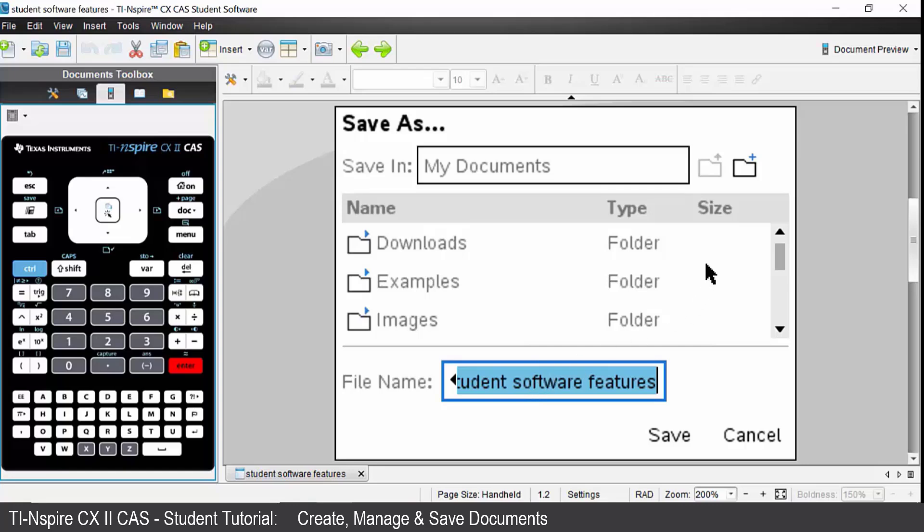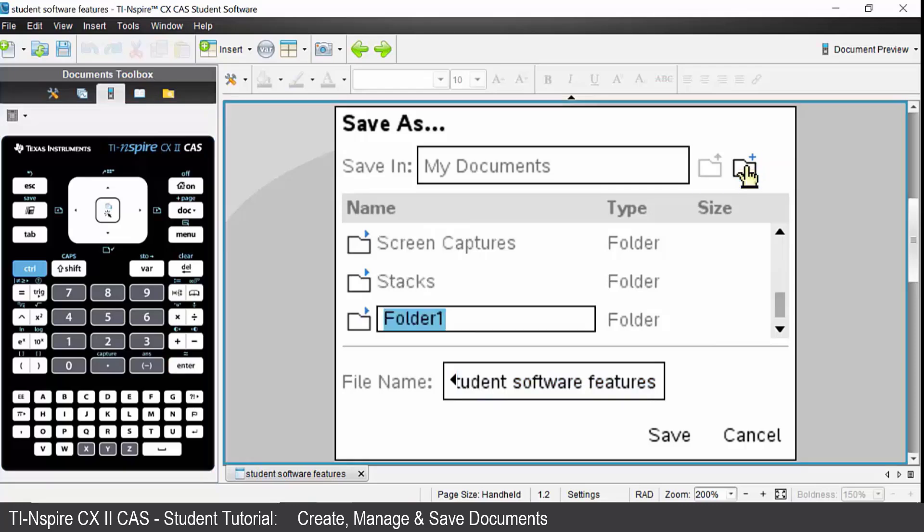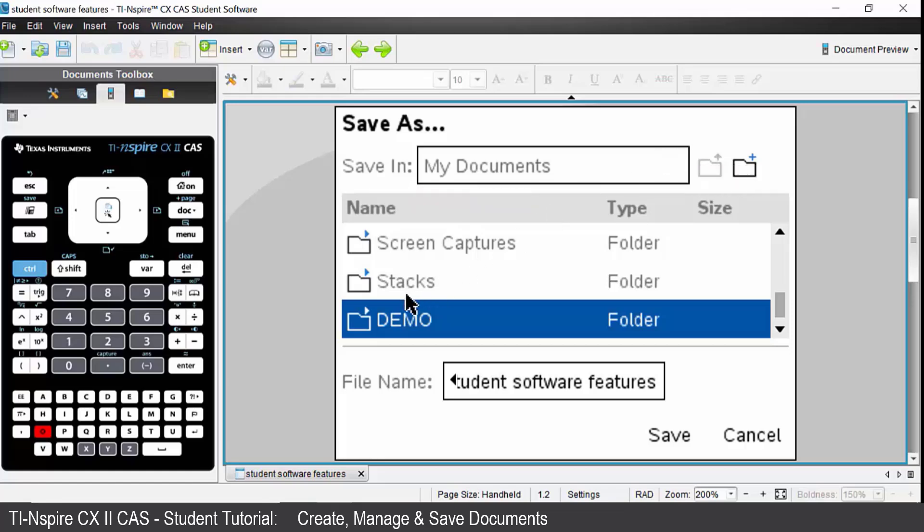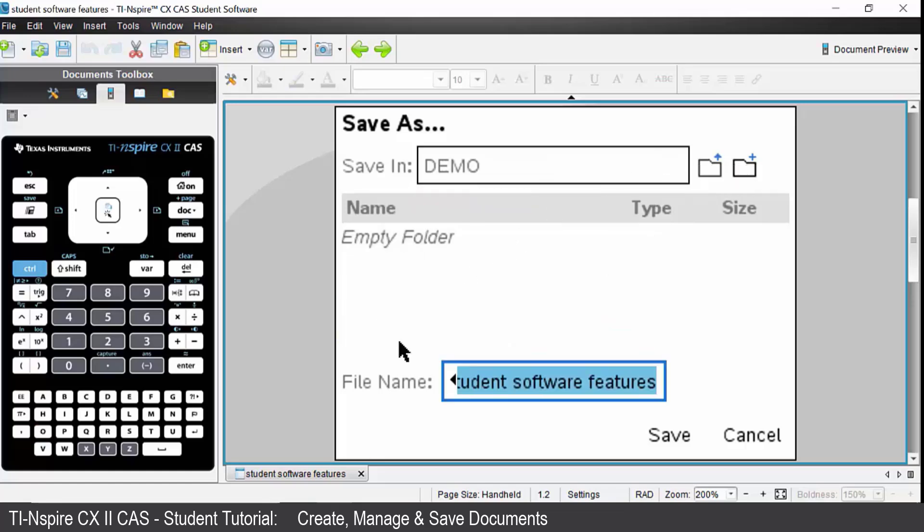You may wish to create a new folder. In which case, press on the new folder icon. Give your folder a name. Once again, I'll call it demo. Open that folder. Give your file a name. Press save and it will be saved directly to your handheld.